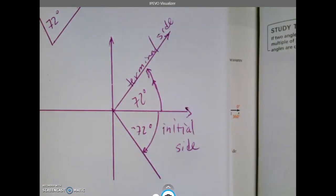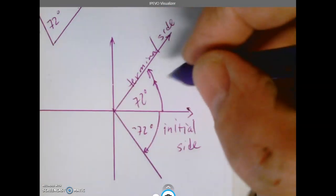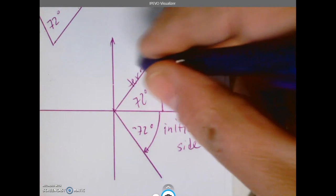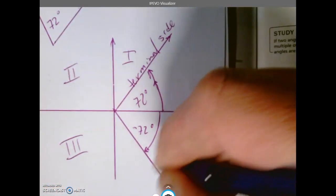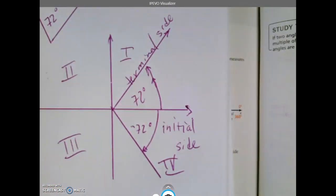Going positive is going around this way, and if you think about it, that's how we numbered the quadrants: one, two, three, four - positive and negative.